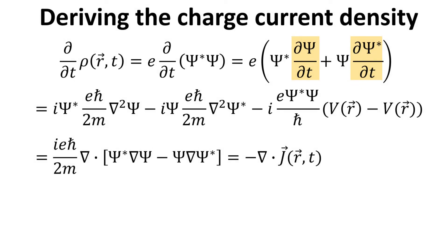With some math, we can collect the terms and expressed it as a divergence of some quantity in the square bracket. Continuity equation requires this expression to be equal to the divergence of the current density.